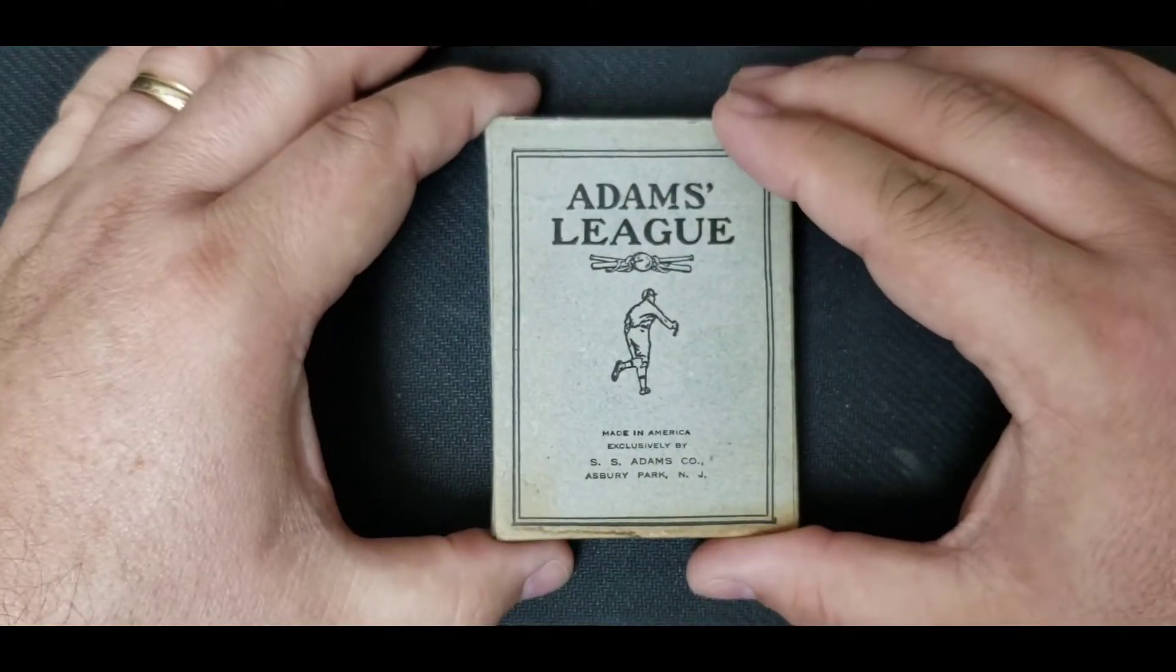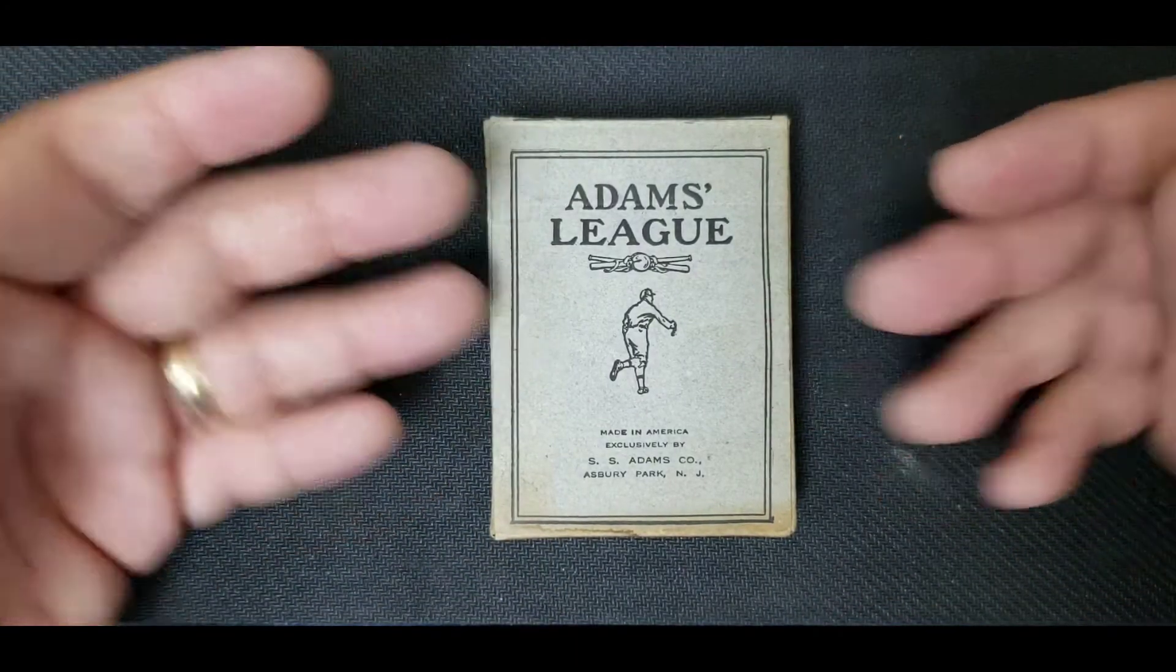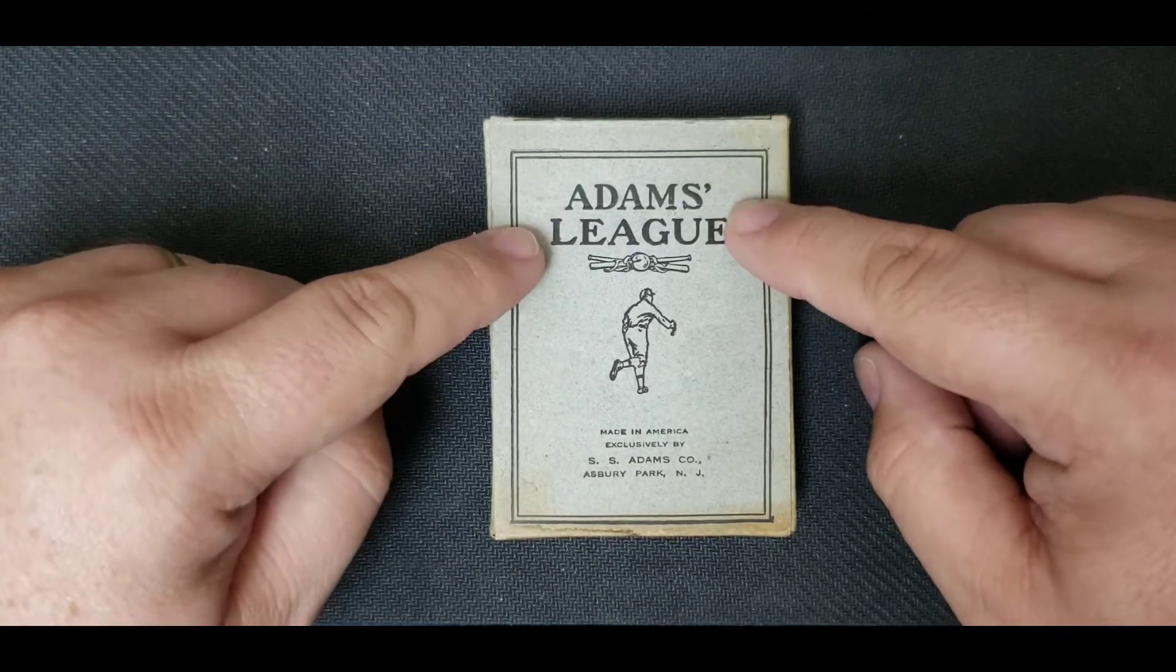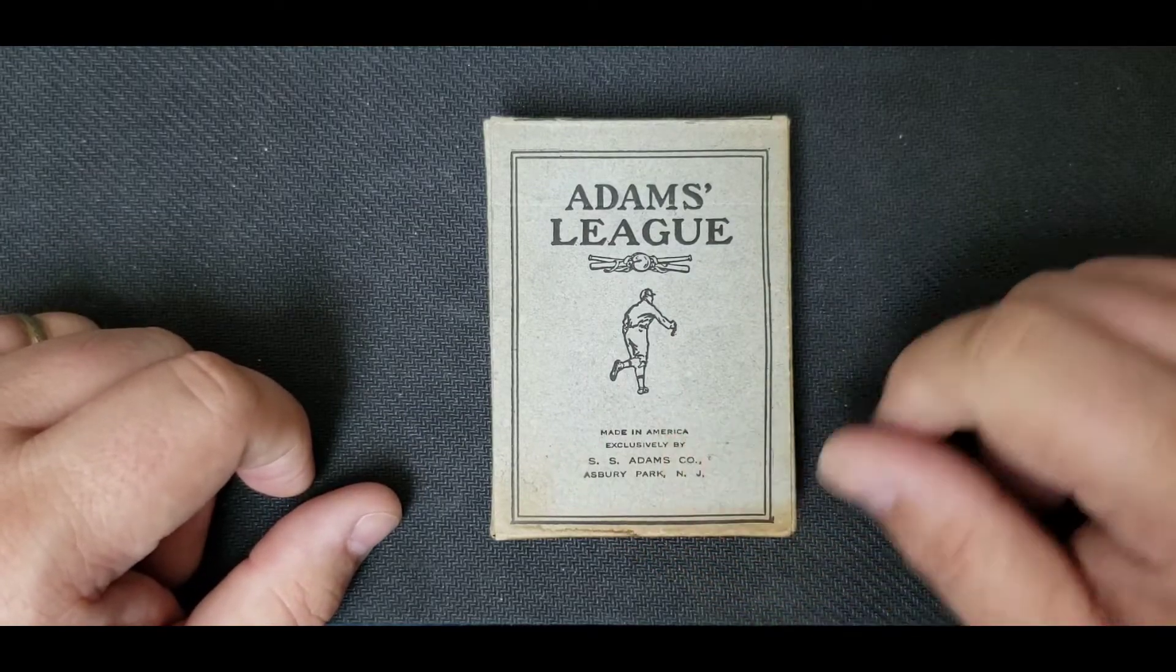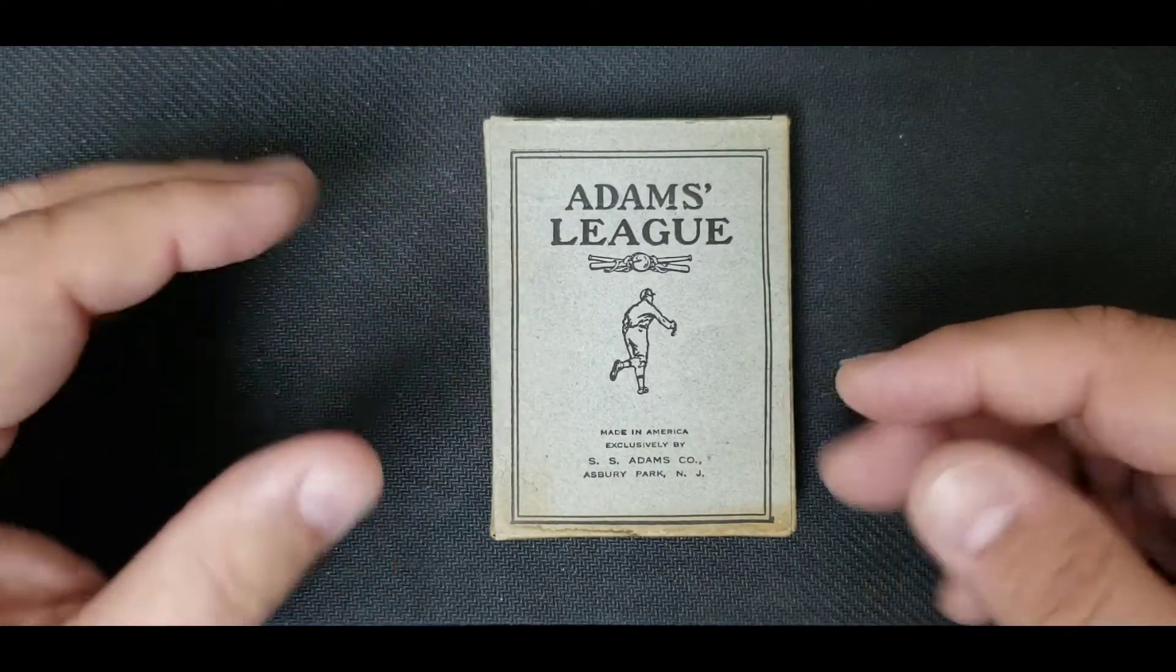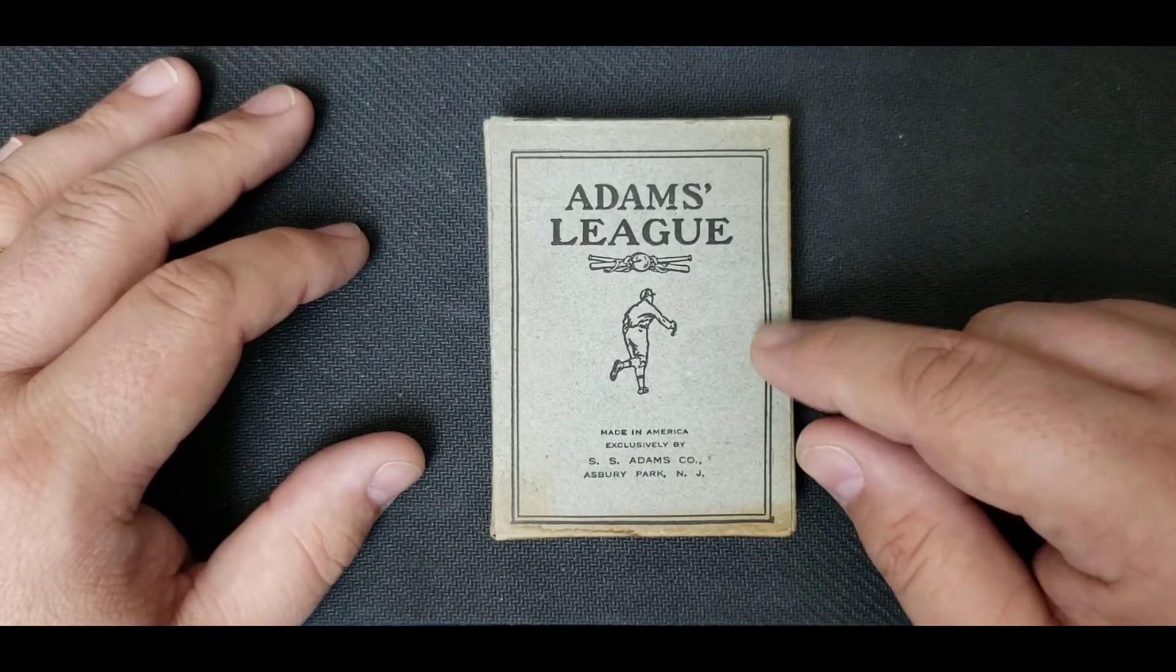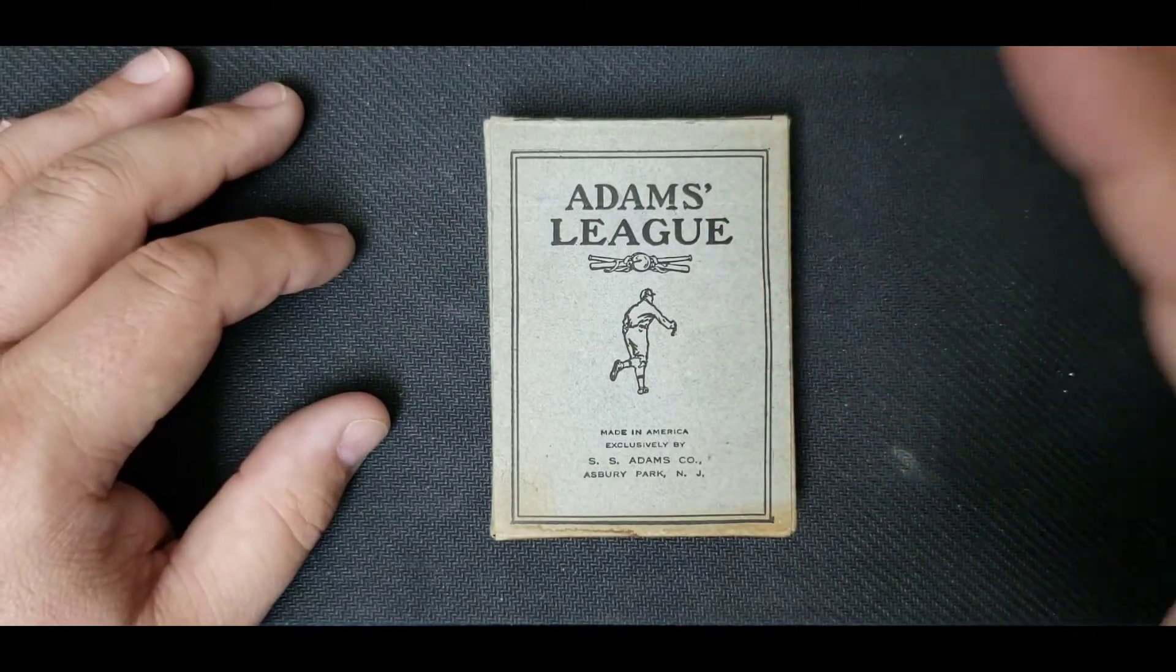Now, there were four different types of deck boxes for the Adams League playing cards. One was this one. The other box had the Adams League name with a dark background, a different picture of the fielder, but no company name. There was a third box with the fielder on a white background and the name included, as well as showing the location of Asbury Park in New Jersey. And finally, a fourth box has red ink instead of black.